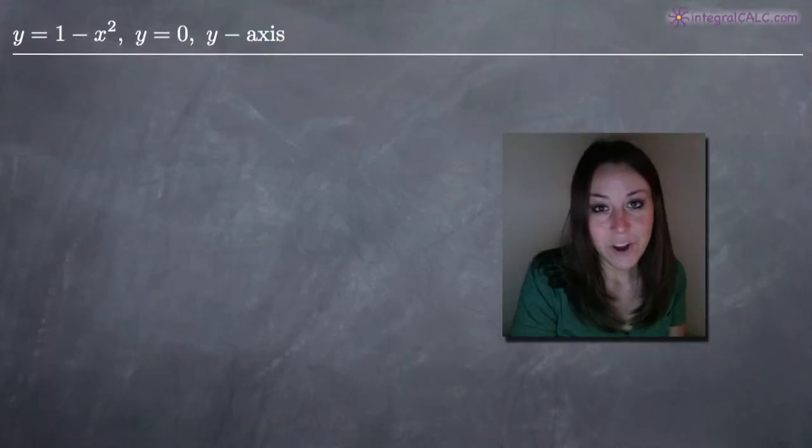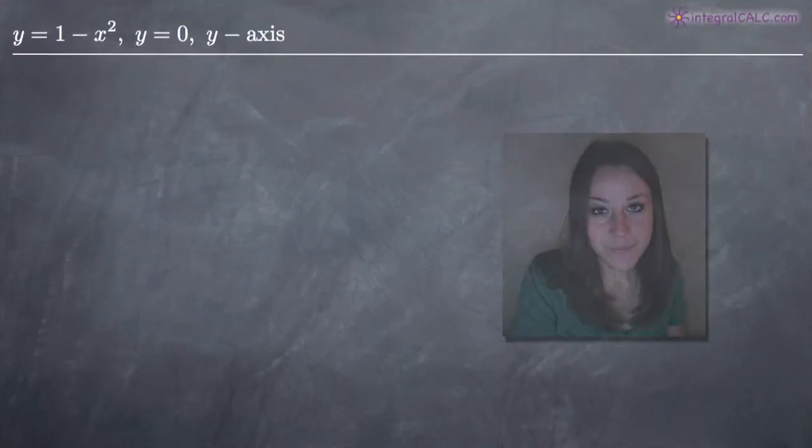Today we're going to be doing a disk and washer method problem. In this particular example, we've been asked to find the area of the region bounded by y equals 1 minus x squared and y equals 0, when that region is revolved around the y-axis.